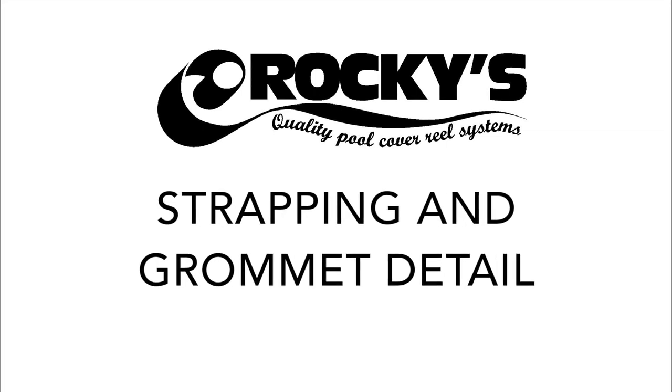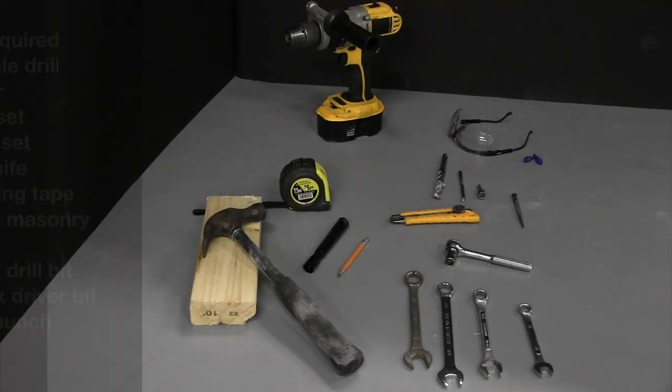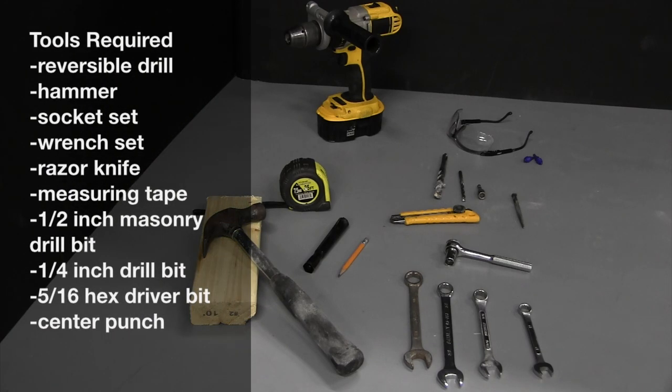Strapping and grommet detail. Tools required: reversible drill, hammer, socket set, wrench set, razor knife, measuring tape, half inch masonry drill bit, quarter inch drill bit, five sixteenths hex driver bit, and a center punch or nail.